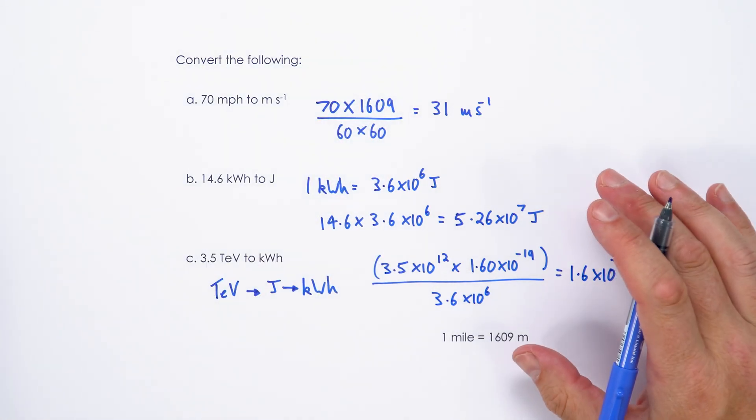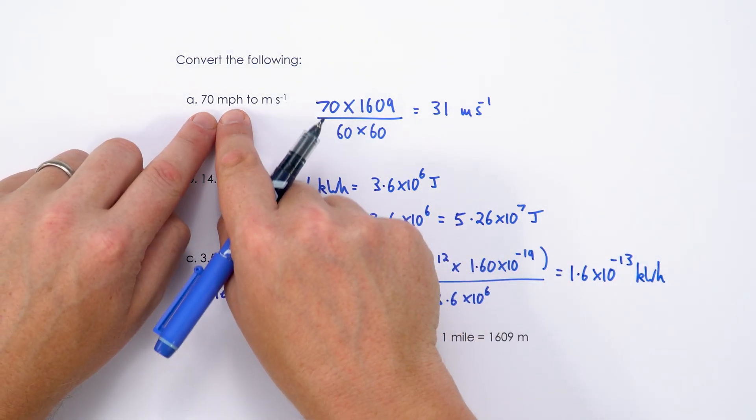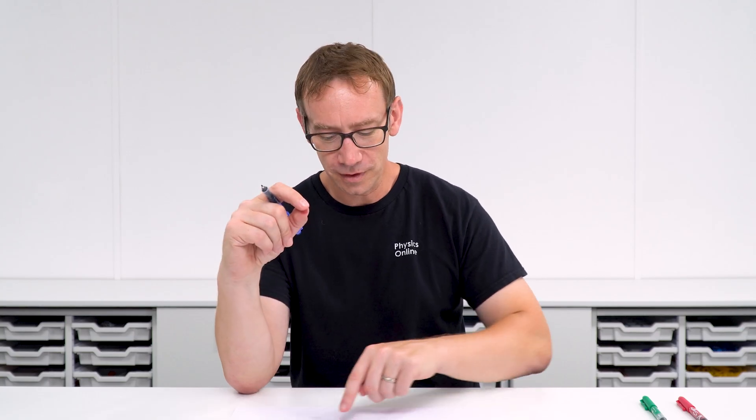So there we go, just some simple unit conversion. For miles per hour, just be aware they will always give you the conversion factor for the number of metres in the mile. The other ones are things that you're expected to know about, and you'll develop those skills as you go through the A-level physics course.